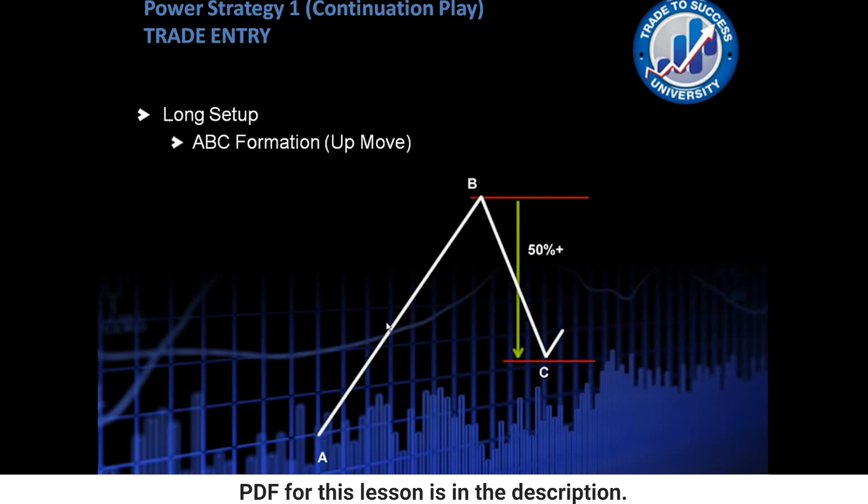So as we can see here, A to B goes up and then B to C comes back in to previous price movement, which was the up move. So it's retraced back down. Now what we need is for this move from B to C to be at least 50%. So 50% of what? 50% of the A to B leg.